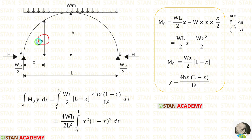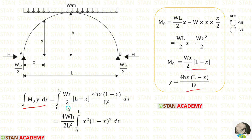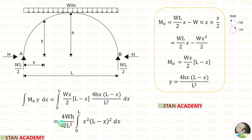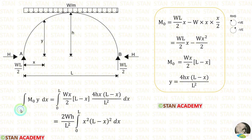We also know the formula for y, which is equal to 4hx(L minus x) divided by L². Applying the values of M0 and y in the formula for the numerator, we take the constants W/2 and 4h/L² outside. Cancelling 2 and 4, we get a factor of 2. The expression for the integration of M0·y·dx is kept as is to be used in the horizontal thrust formula.